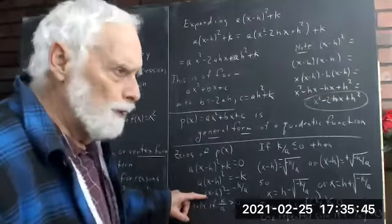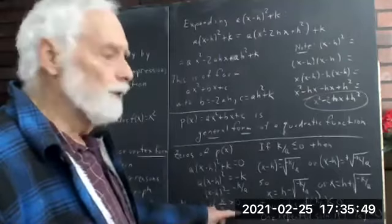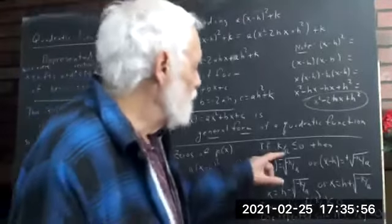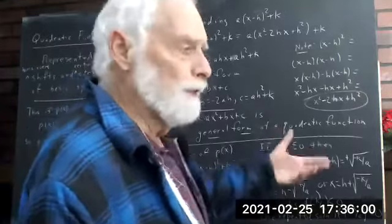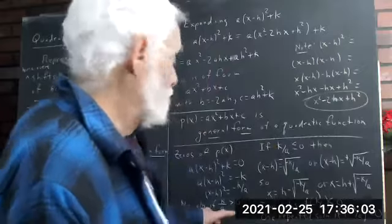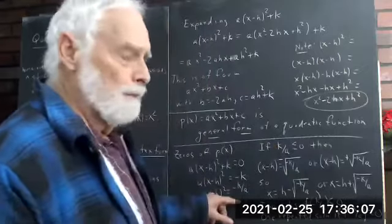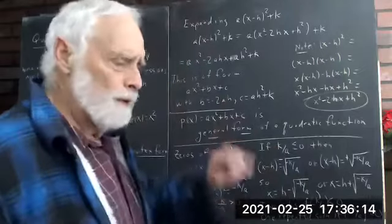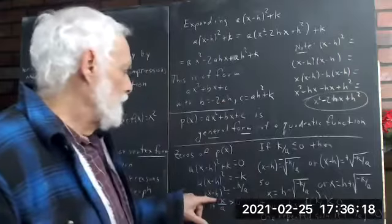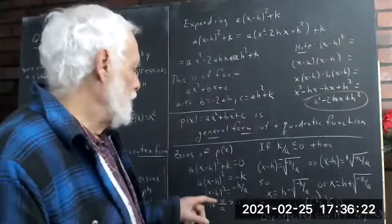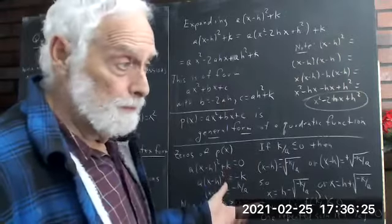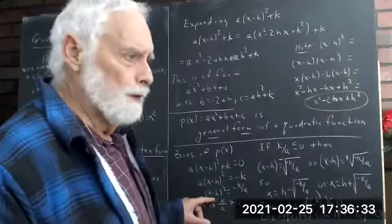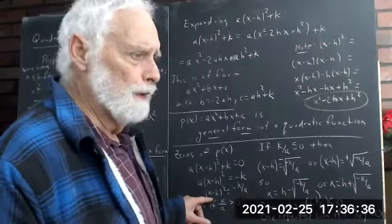There's no solution if k/a is positive, because then −k/a is negative and a square can't be negative. But if k/a is less than or equal to zero, then −k/a ≥ 0. In that case: if −k/a > 0 you have two solutions, since x−h = ±√(−k/a), giving x = h ± √(−k/a). If −k/a = 0 you have one repeated solution.